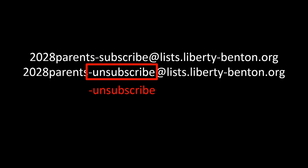Now let's suppose you have an accelerated student who skips first grade and goes to second grade. You don't need to be on the 2028 list anymore and you want to get off that list. You would send a similar message, but you would unsubscribe. It'll take you through the same confirmation process and that'll be it.